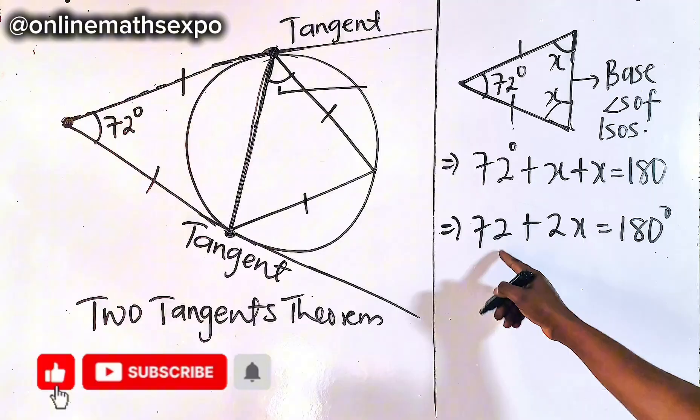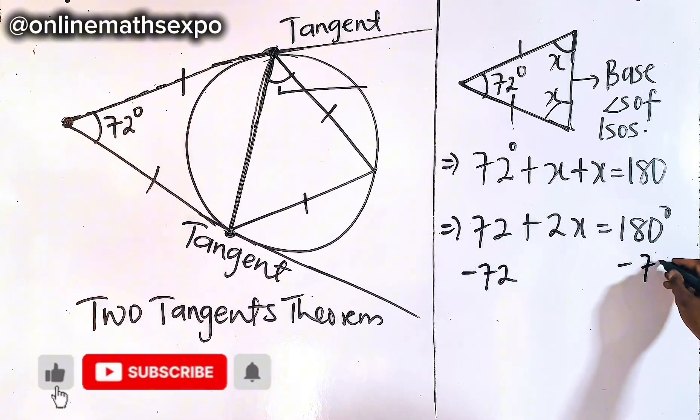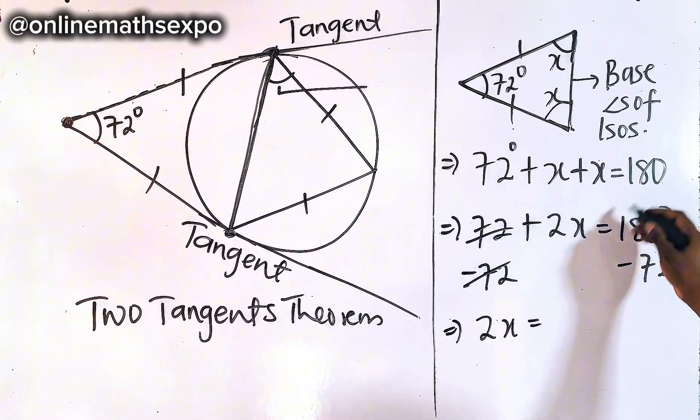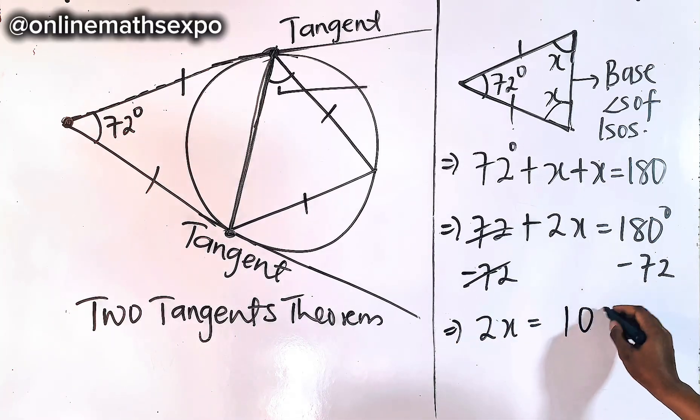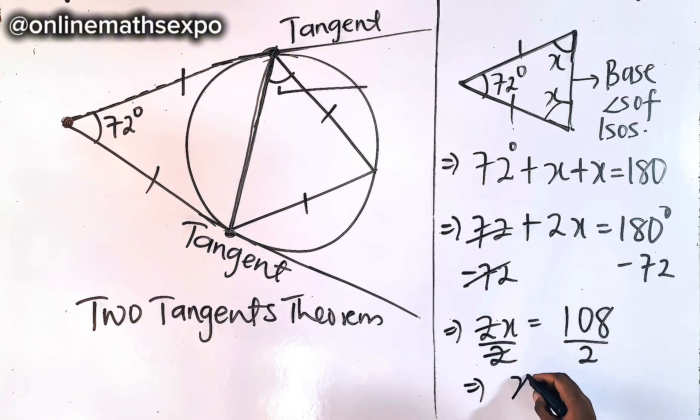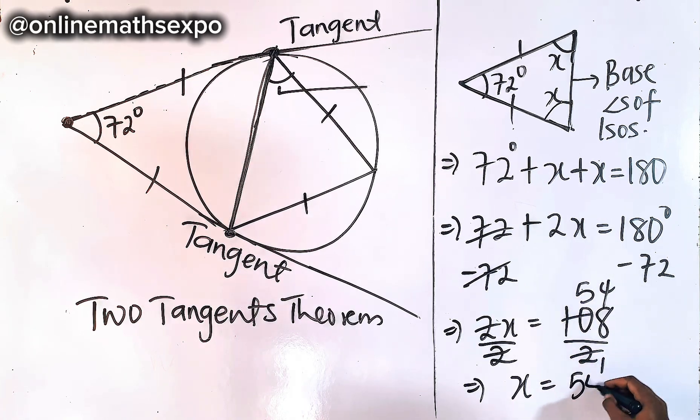So to remove this, use the additive inverse to subtract. We subtract 72, and 2x will give us 108. To get x, divide by 2, and we have x equals 54. So the value of x is 54 degrees.